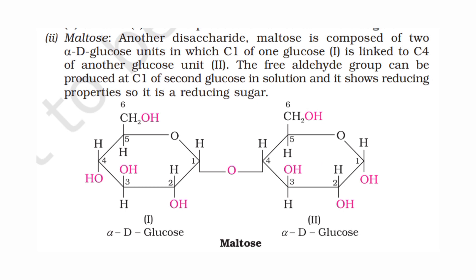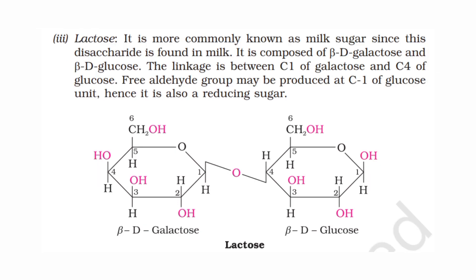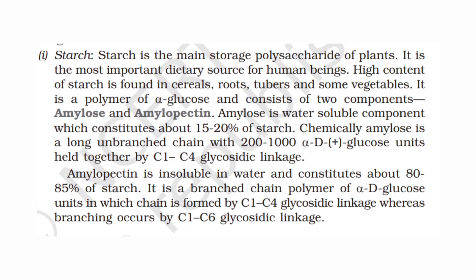Maltose is also made of 2 monosaccharide units — two alpha-D glucose units joined by a glycosidic bond. Lactose is the milk sugar, formed from beta-D galactose and beta-D glucose. These are examples of disaccharides under oligosaccharides.